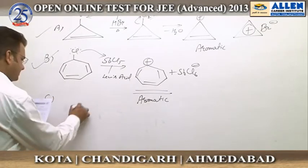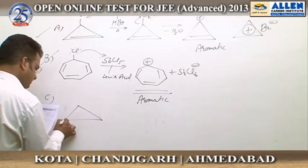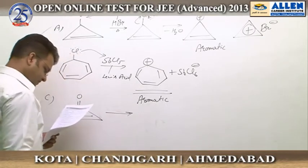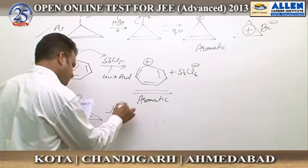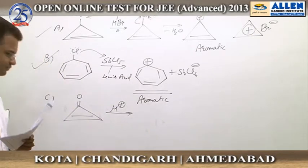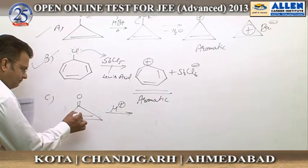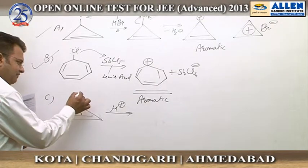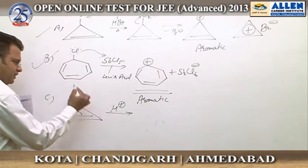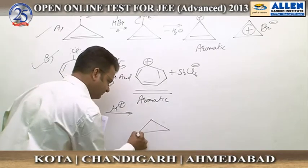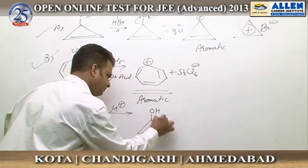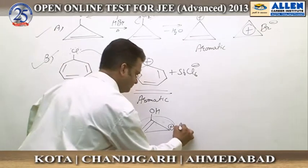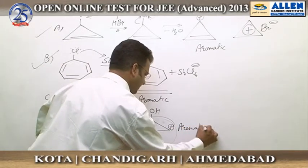For option C, if you analyze — it is an unsaturated ketone. When H⁺ is provided, the site of protonation: because of resonance, O is having negative charge. So if H⁺ is provided to this site, you will find this site as an aromatic site — the ring is aromatic again.